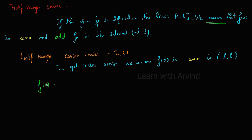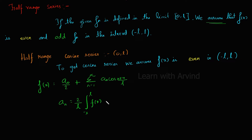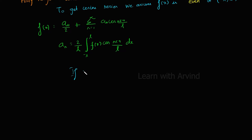The Fourier cosine series would look like this: f(x) is equal to a₀ by 2 plus summation n equals 1 to infinity of aₙ cos(nπx/L). aₙ is given by 2 by L times the integral from 0 to L of f(x) cos(nπx/L) dx. If the function f(x) is in the range 0 to π — not L, this time it's π —